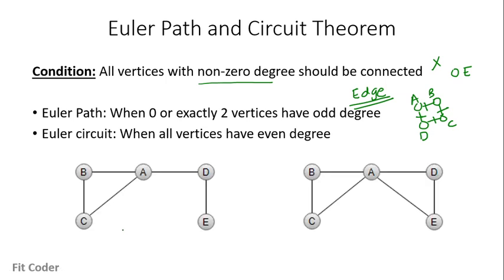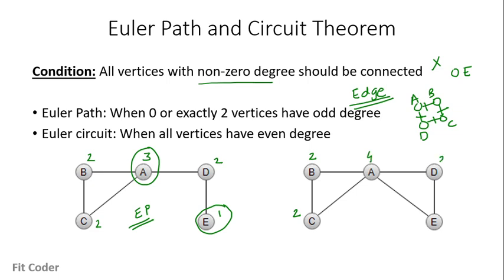Let's see an example. Calculating the degree for each vertex: vertex C has degree 2, B has degree 2, A has degree 3, D has degree 2, and E has degree 1. We have 2 vertices with odd degree, so this graph contains an Euler path. For the right side graph: C has degree 2, B has degree 2, A has degree 4, and D and E both have degree 2. All vertices have even degree, so this graph has an Euler circuit. By calculating vertex degrees we can determine whether a graph contains an Euler path or Euler cycle.